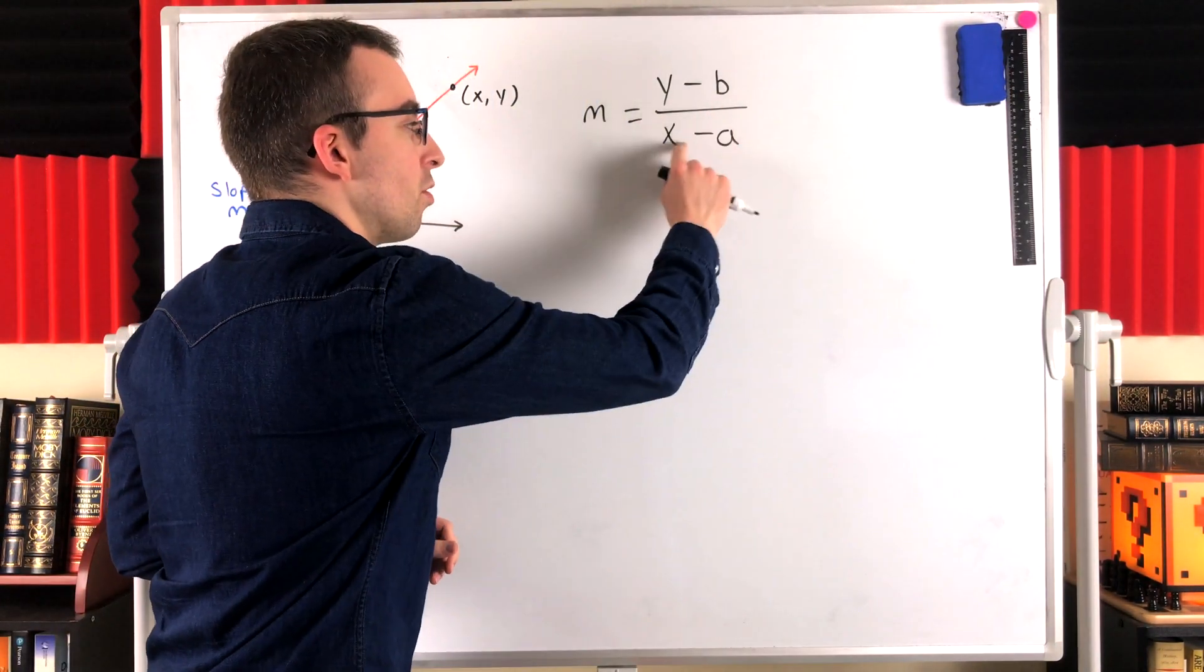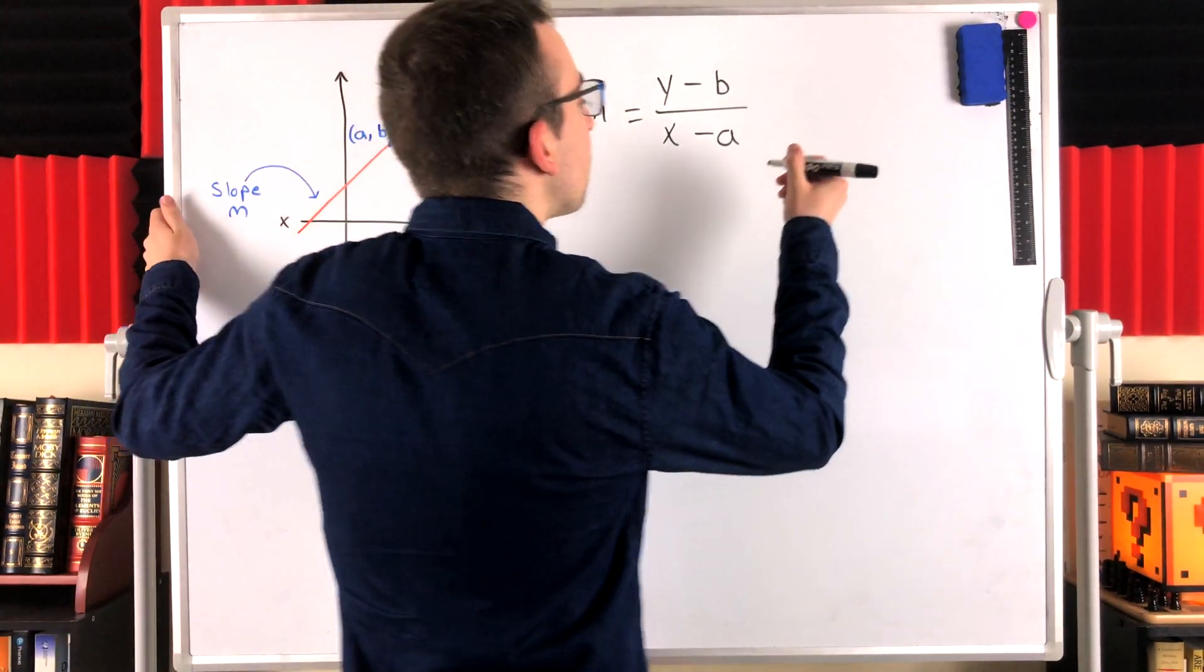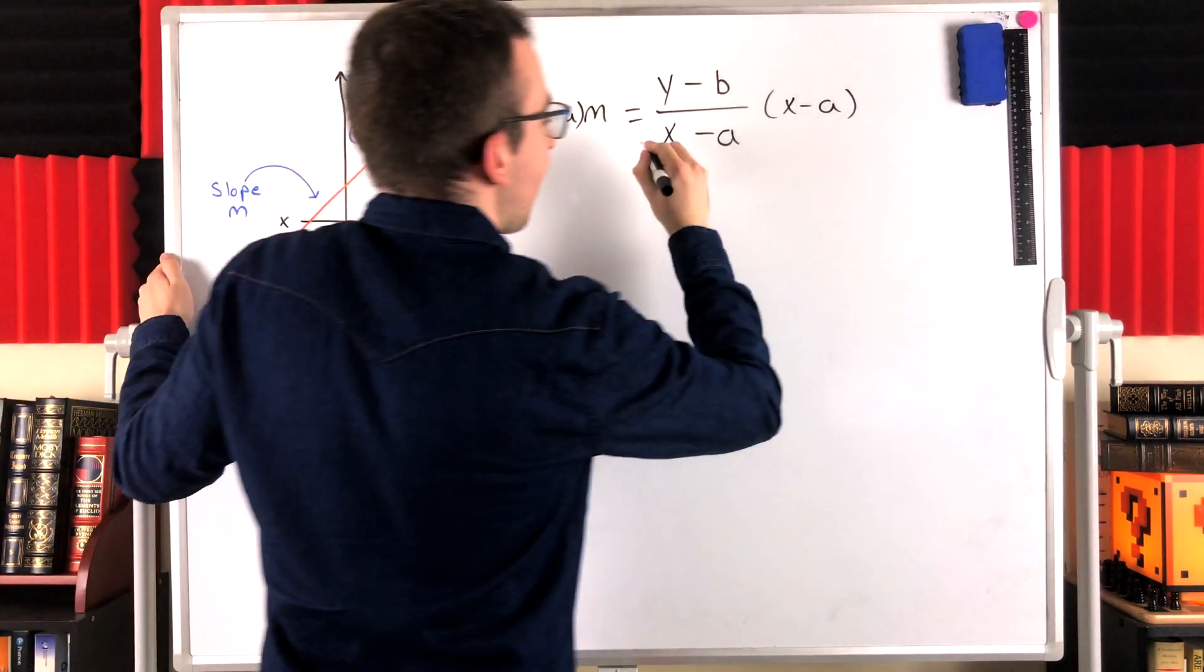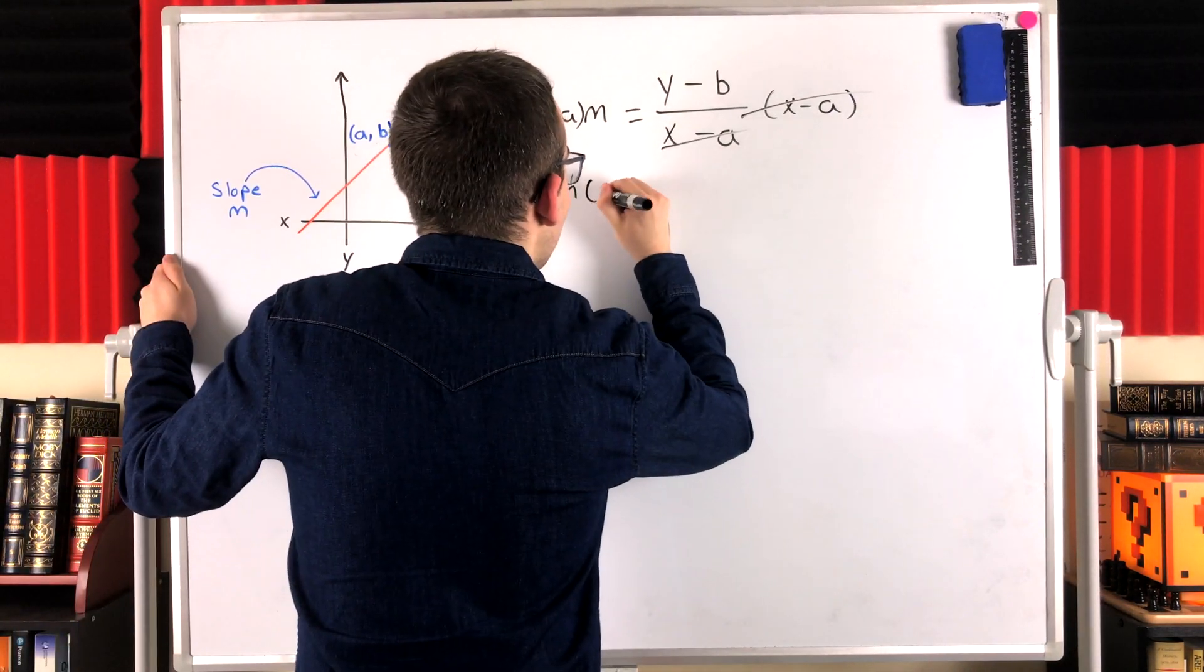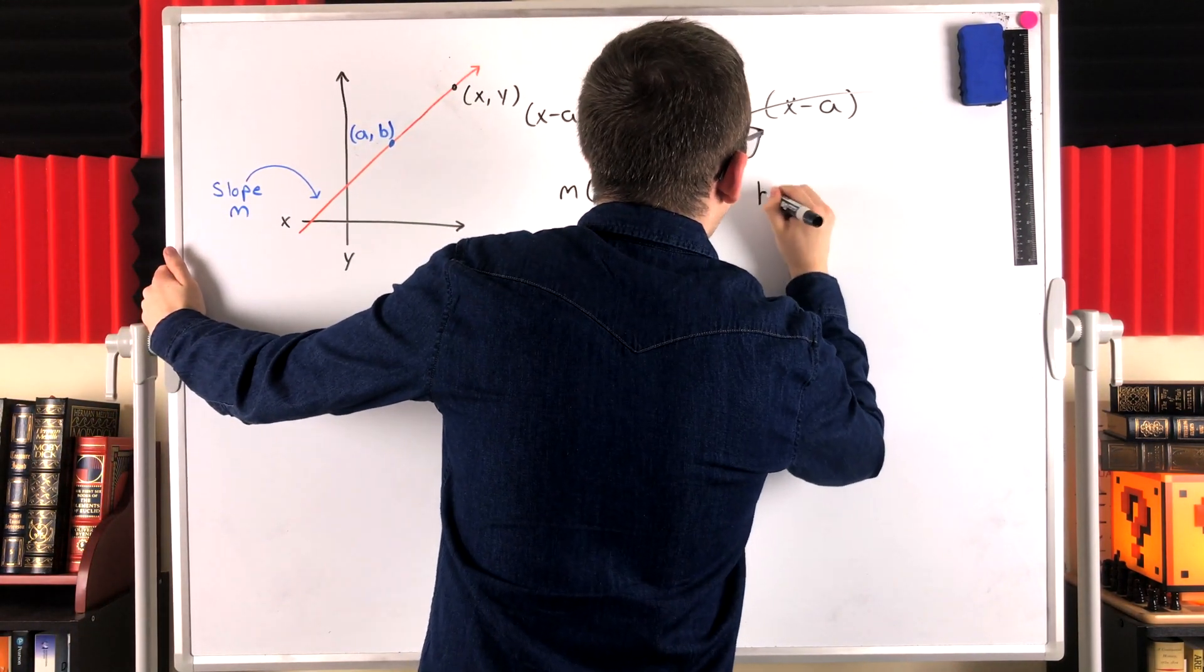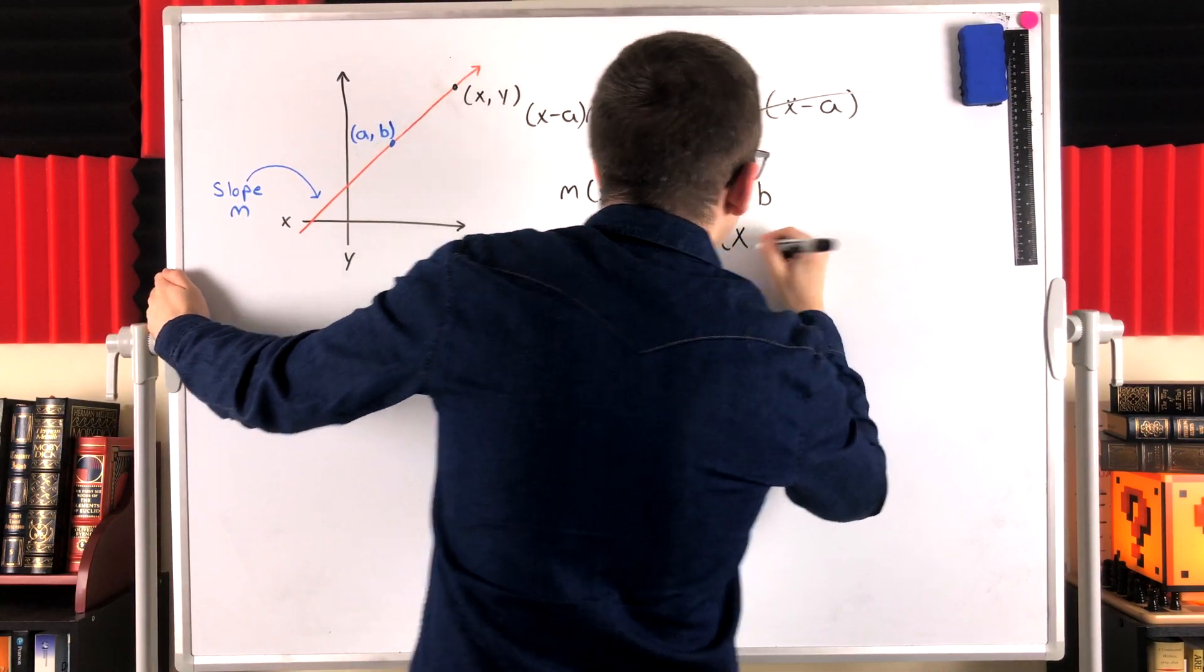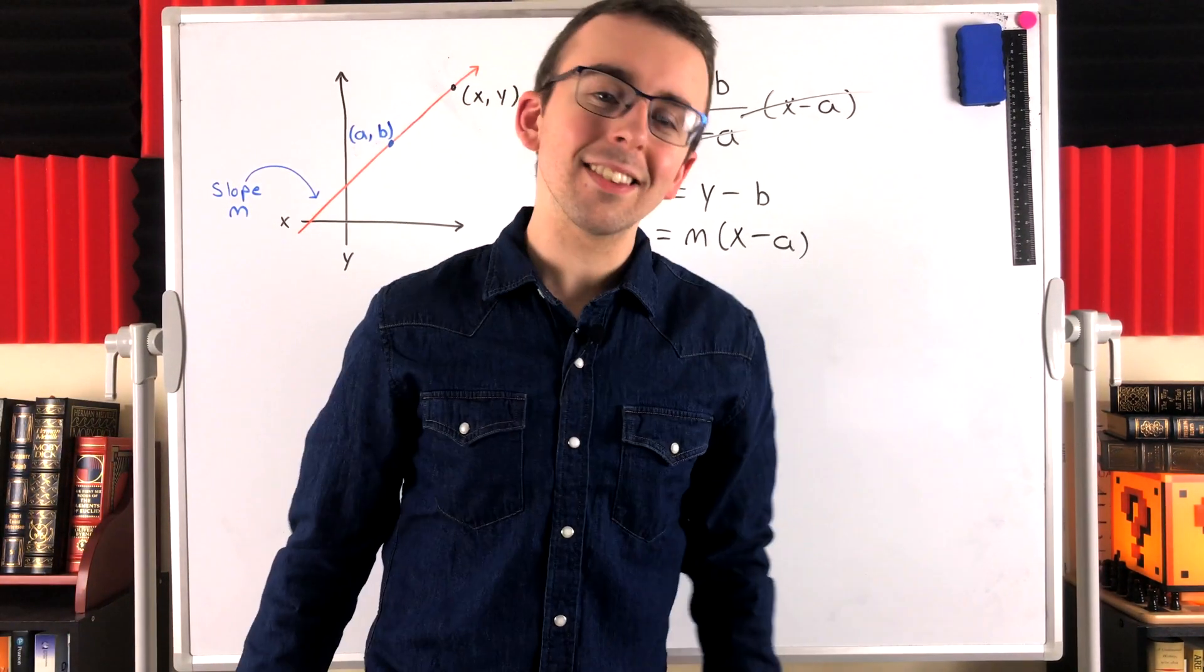But, of course, we can get rid of that division by zero problem at this point if we get rid of this division. We could do that by multiplying both sides by this denominator, X minus A. We multiply both sides of the equation by X minus A. They cancel out. What do we got left? We've got the slope M times X minus A is equal to the numerator that we have left on the right side, Y minus B. And then, we might just like to write this like this with the Y minus B side on the left. So, Y minus B is equal to the given slope M multiplied by X minus the X coordinate A of the given point.